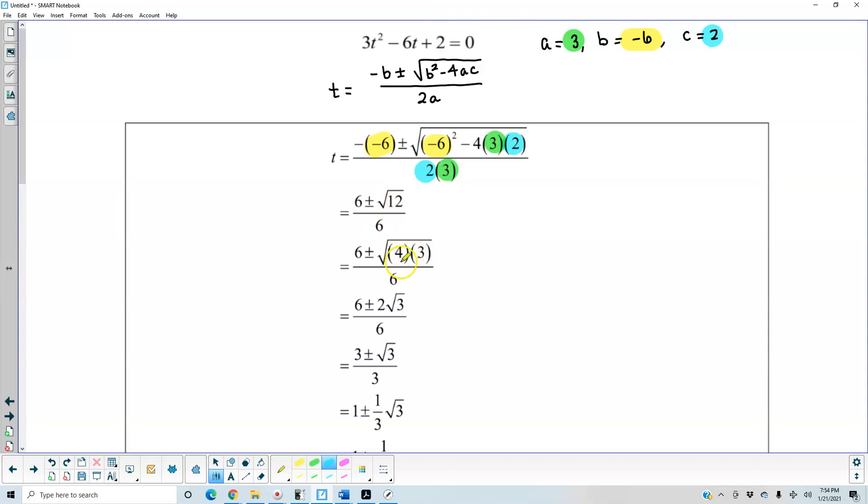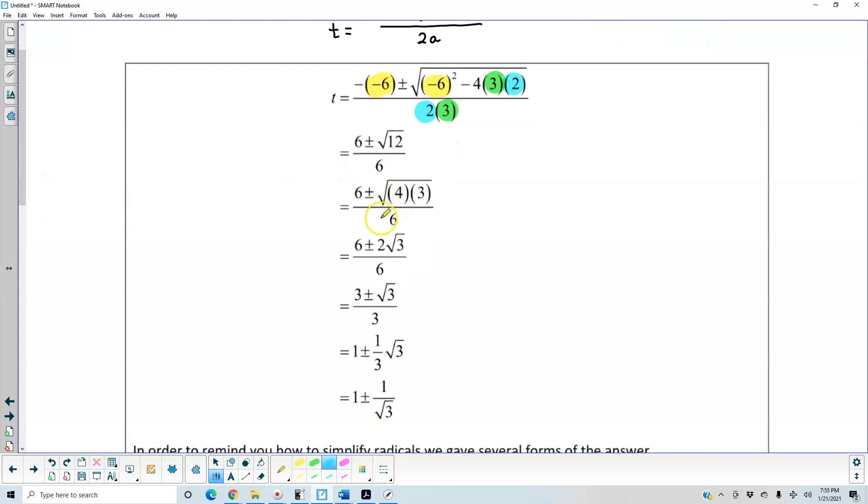Now keep in mind that 12 can be broken down as 4 and 3. So the square root of 4 gives us 2. So we have 6 ± 2√3, and then we can simplify the 6s and the 2s.